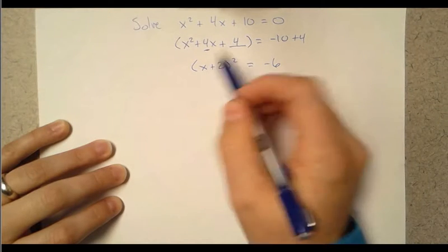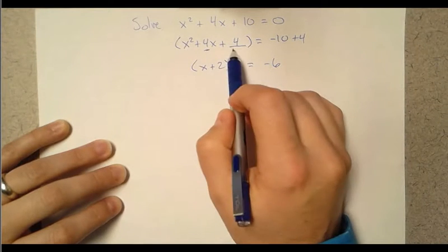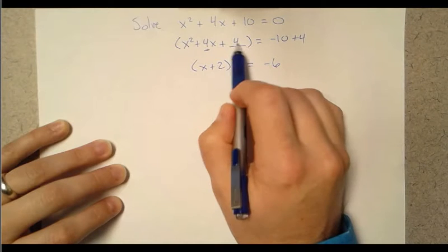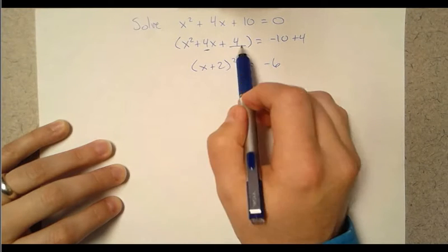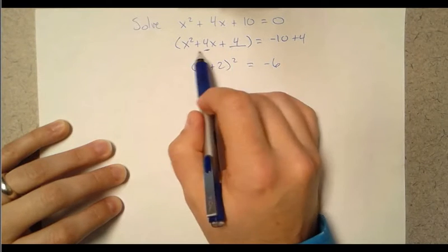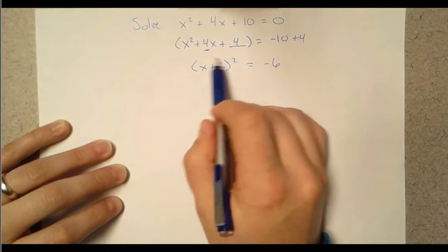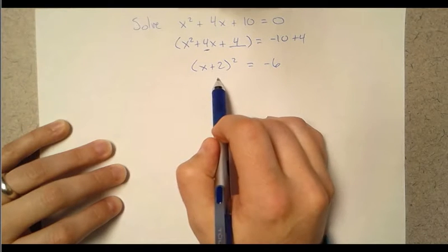Now again where did this come from? Remember when we factor multiples or factors of this that add to make 4. Well of course it's 2 in this case. And this will always be a perfect square. It's going to factor down to some nice form like this.